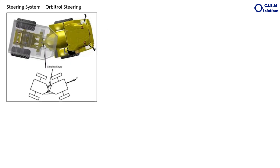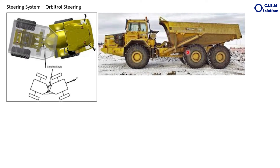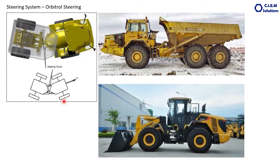There are two types of machine arrangements. The first is the articulated truck, where the machine does not steer by turning the tires but by moving both halves of the machine around a center pivot joint. Steering cylinders are connected between the two halves. To move left, the left cylinder retracts and the right extends; to move right, the right retracts and the left extends. This articulated steering system is used on machines like wheel loaders.